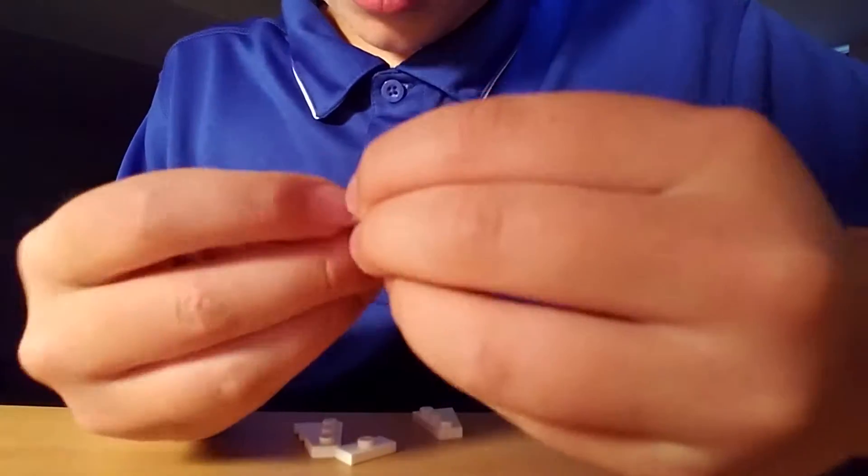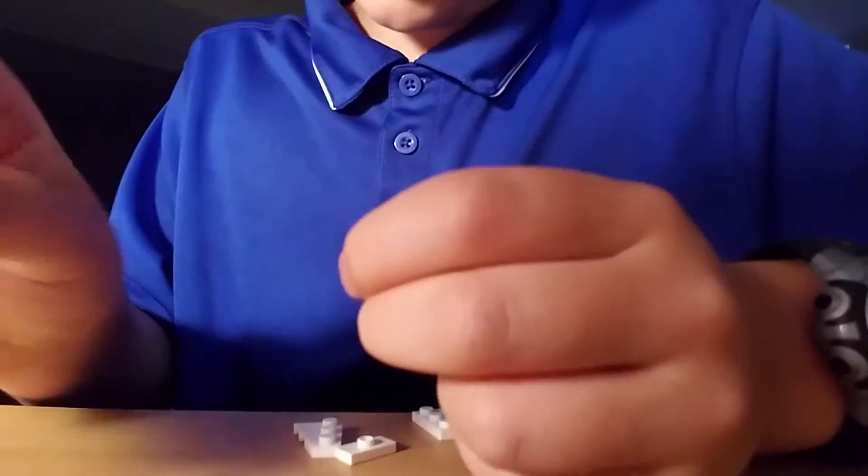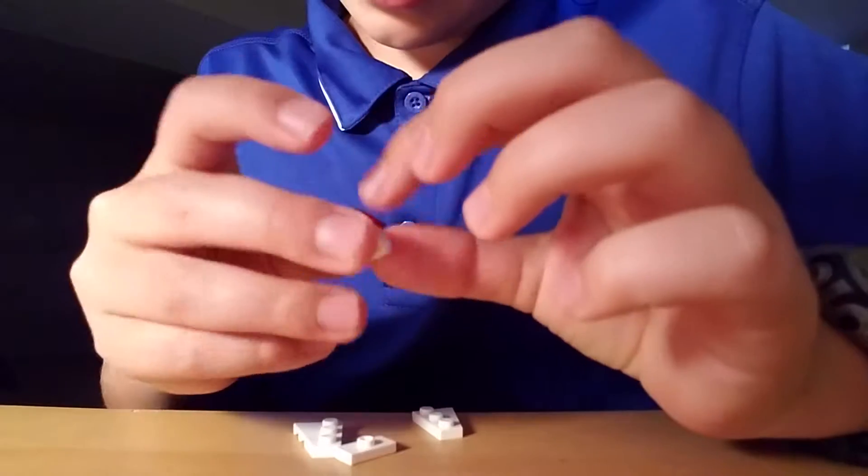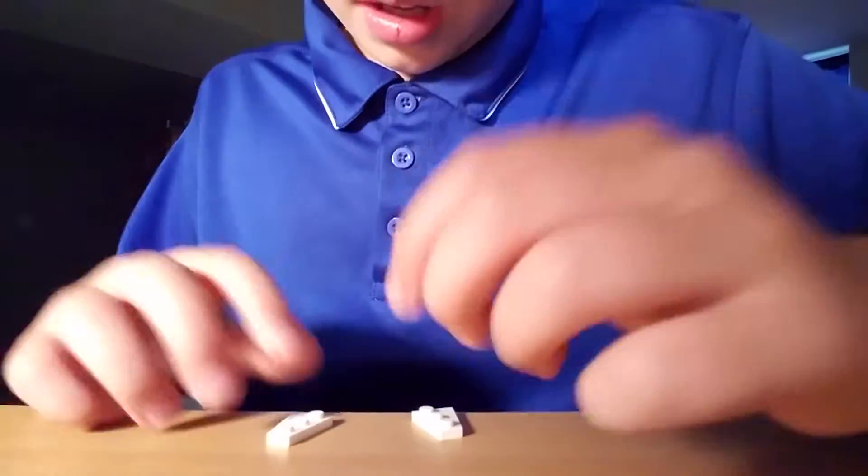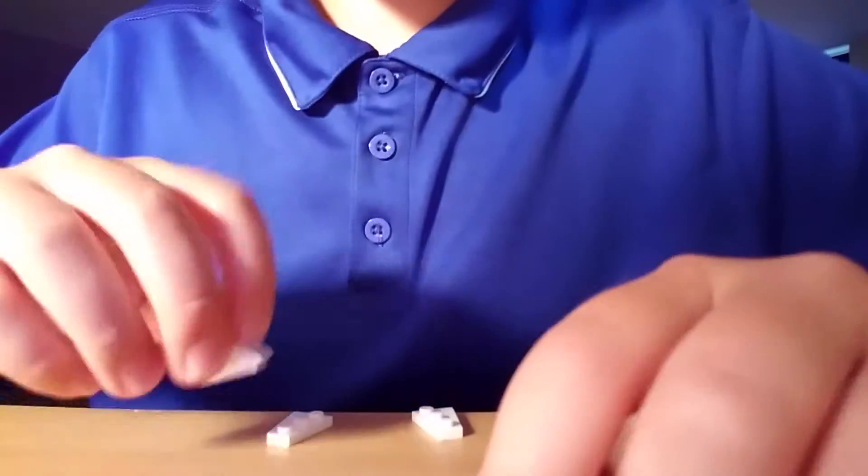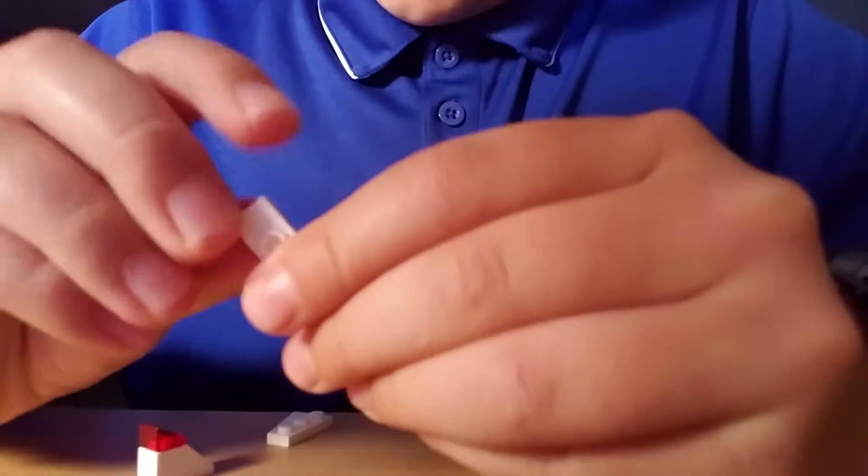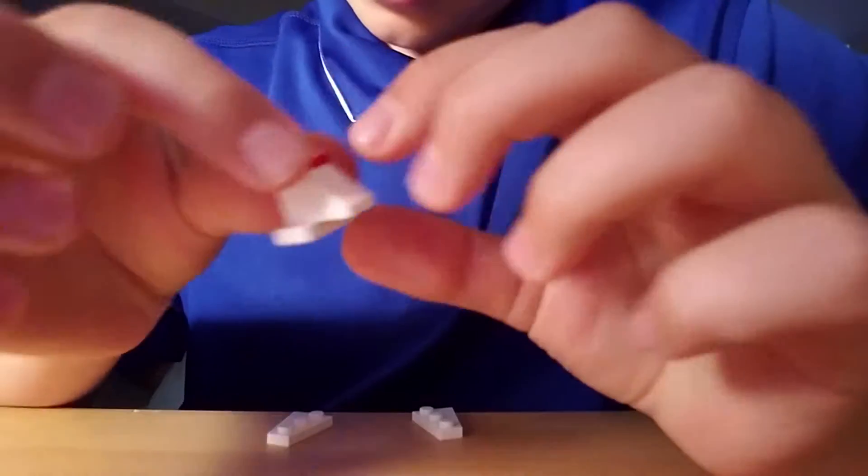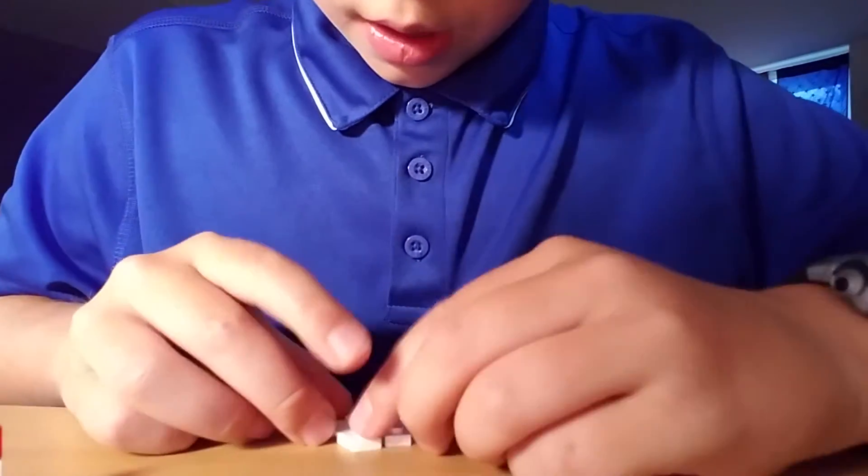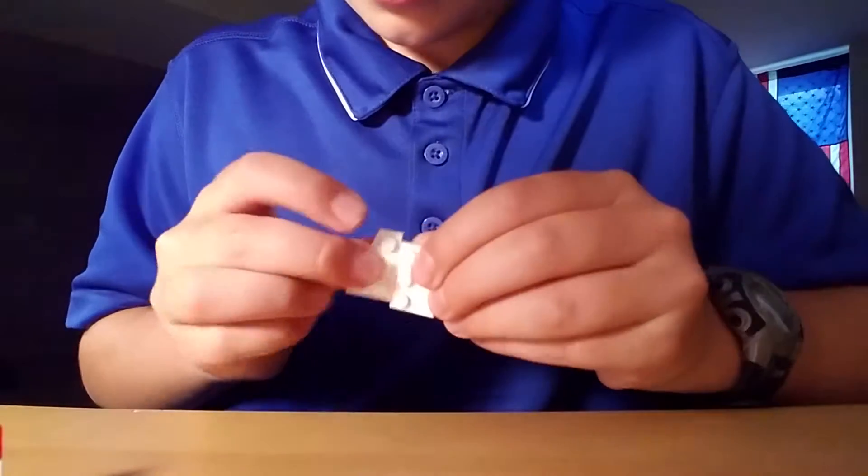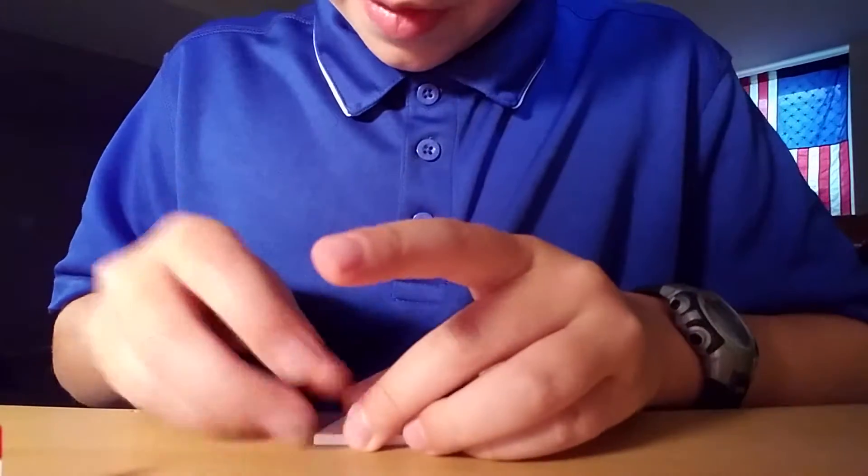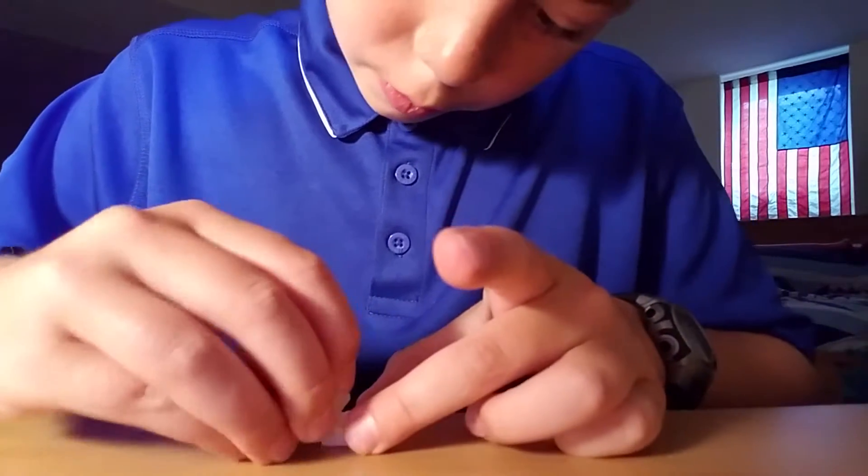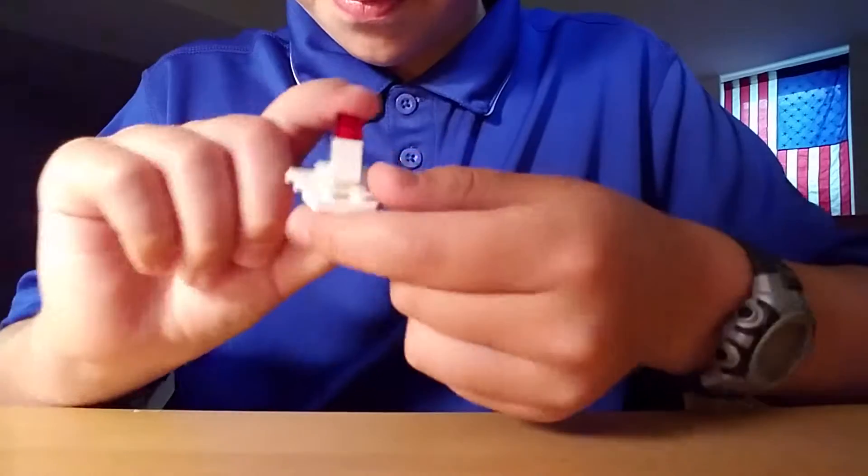And, you're going to want to put that on top of the 1 by 2 slant piece. So, it looks like this. Then, after that, you want to take the 1 by 2, 1 stud piece in the middle. And, you're going to want to go like this. And, then, you're going to put the 2 opposite pieces together. And, this goes on the back facing forward. Like so.